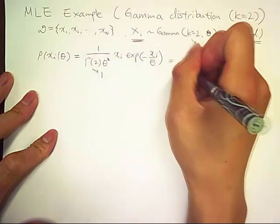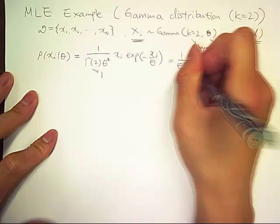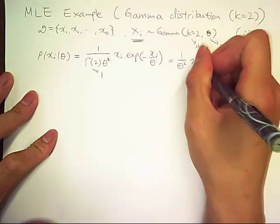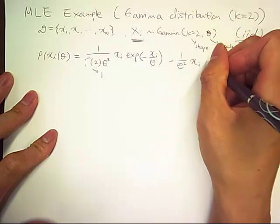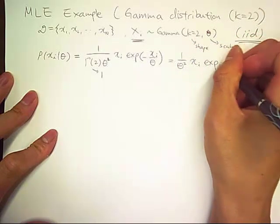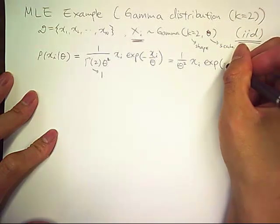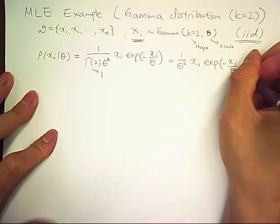So we can simplify this to 1 over theta squared times x sub i times exponent of negative x sub i over theta.